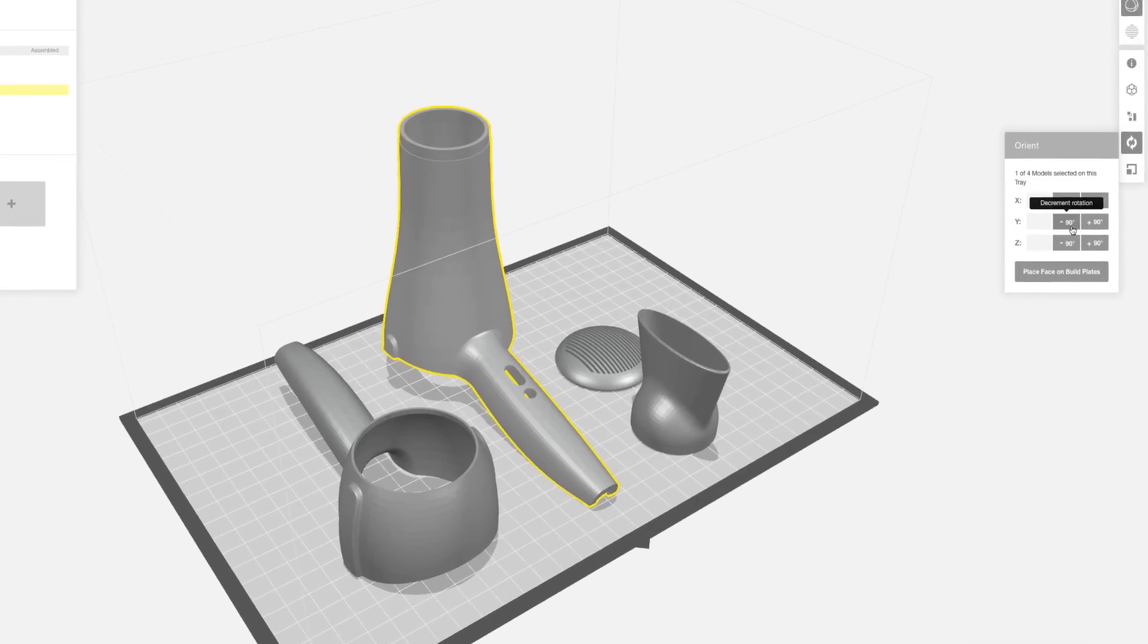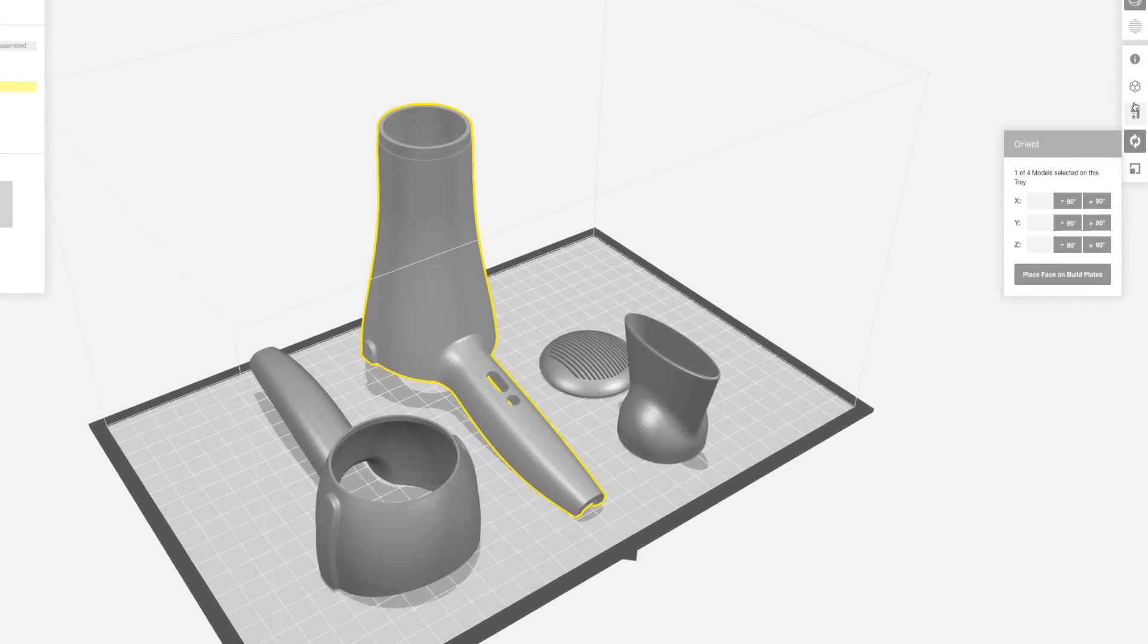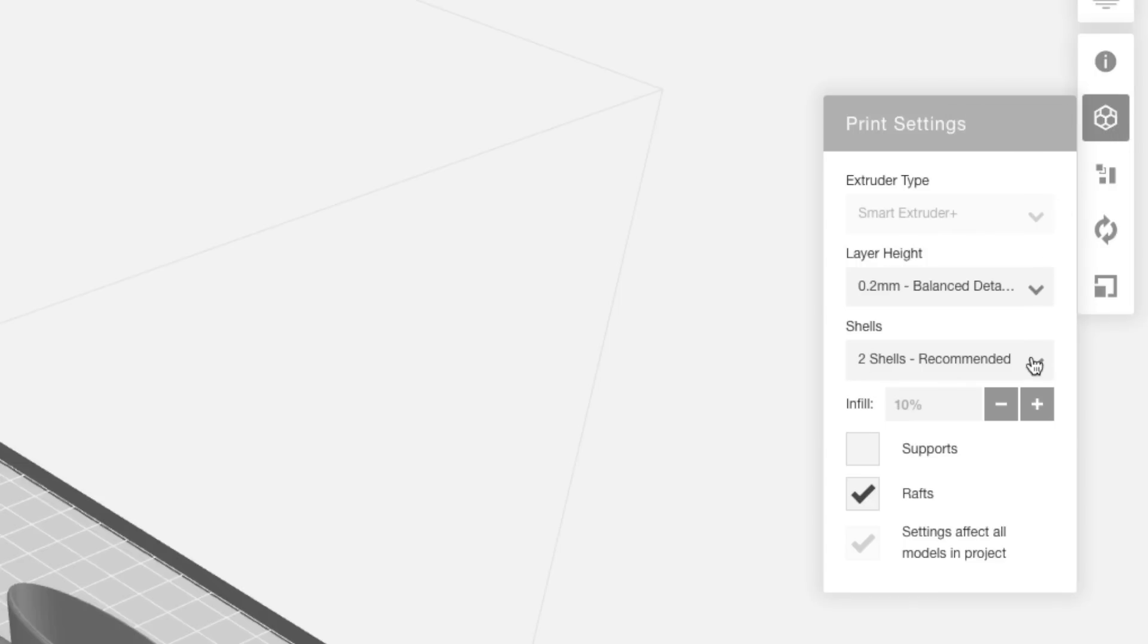When printing, you can select certain print settings to minimize work later on. We printed our model with standard settings of 0.2mm layer height, 10% infill, and two shells.